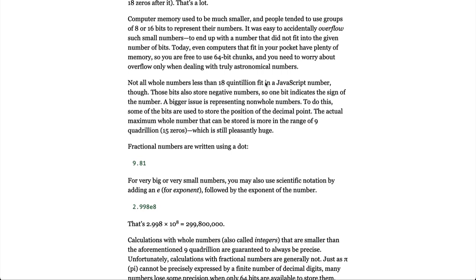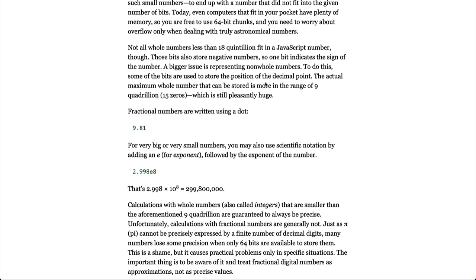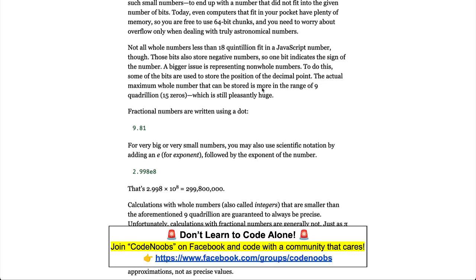Not all whole numbers less than 18 quintillion fit into JavaScript number. Those bits also store negative numbers, so one bit indicates the sign of the number. A bigger issue is representing non-whole numbers. To do this, some of the bits are used to store the position of the decimal point. The actual number of whole numbers that can be stored is more in the range of 9 quadrillion, 15 zeros, which is still pleasantly huge.